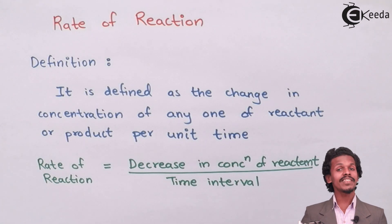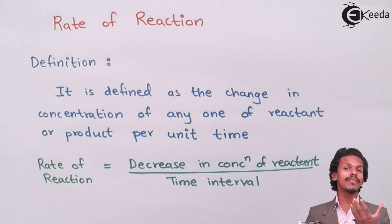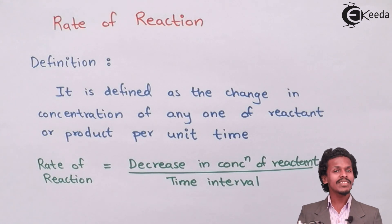It means as the reaction proceeds, there is change in concentration of reactant and there is change in concentration of product. As you know, if the reaction is moving forward, suppose if I give you an example that A is converting into B. So as the reaction proceeds,